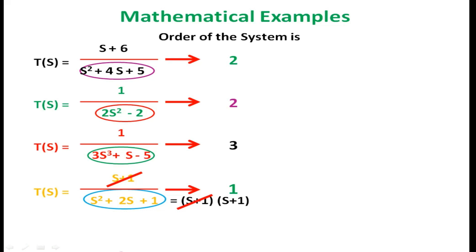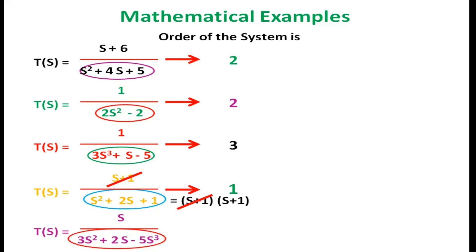Example 5: T(S) = S/(3S² + 2S − 5S³). The denominator has S as a common factor, so factoring gives S·(3S + 2 − 5S²). The S in the numerator cancels with the S factor in the denominator, leaving T(S) = 1/(3S + 2 − 5S²). Rearranging: −5S² + 3S + 2. The highest exponent of S is 2, so the order of the system is 2.